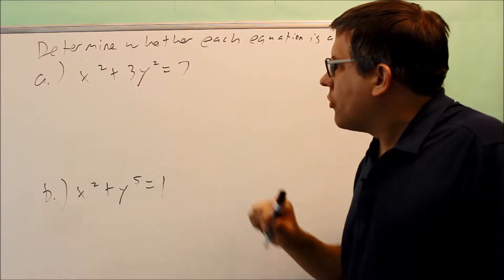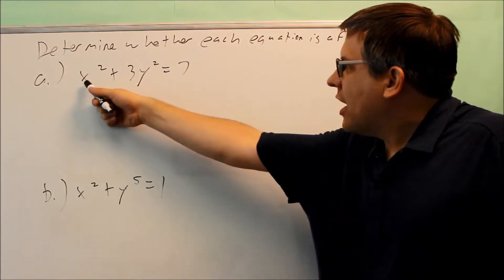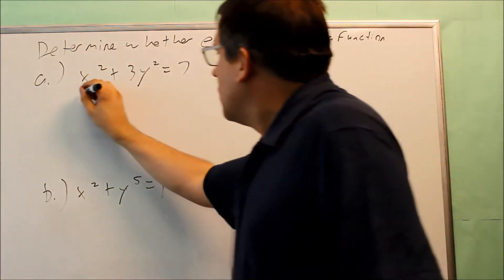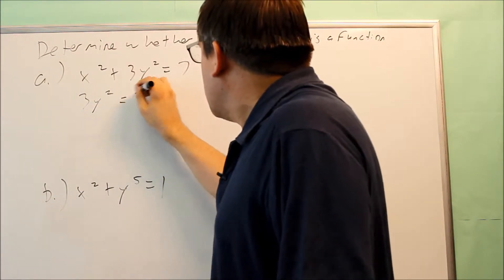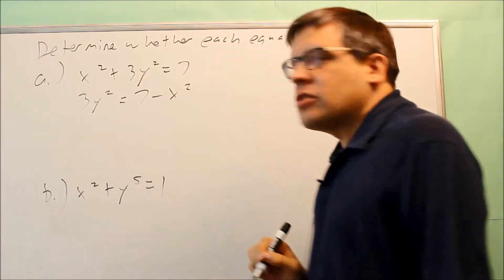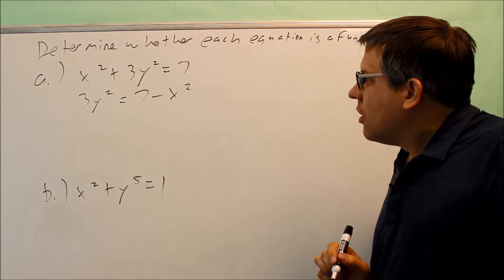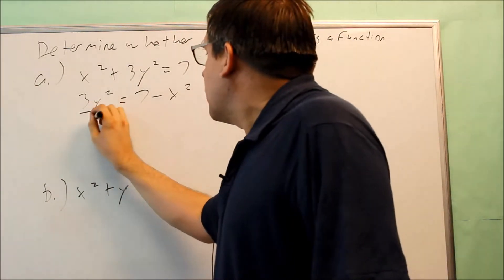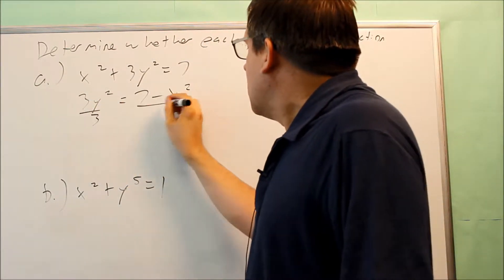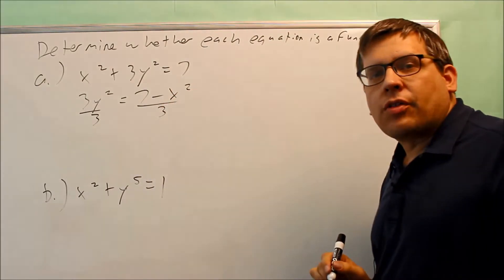So for this, we're going to first solve by moving the x squared across the equal sign. So 3y squared is equal to 7 minus x squared. Now I have to divide everything by 3, so I'm going to take this and divide that whole thing by 3.